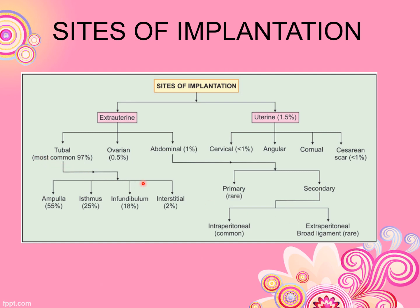There are many parts of the tube where the fertilized ovum can implant. Intra-uterine ectopic sites account for 1.5% of cases. These include cervical, angular, and cesarean scar pregnancies. In a cesarean scar pregnancy, the embryo attaches to the scar tissue. This accounts for less than 1% of implantations.